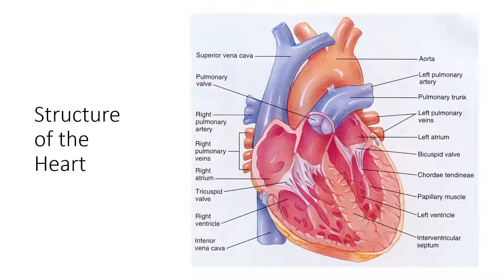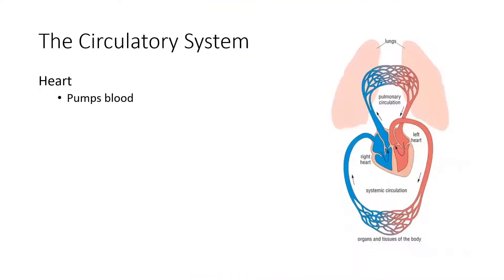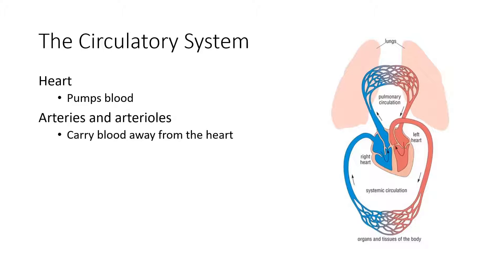The heart is the muscular structure that contracts to send blood either to the pulmonary system or to the circulatory system. Pulmonary circulation goes from the right side of the heart to the lungs and comes back into the left side, where the left side pumps blood out to the rest of the body. Arteries and arterioles carry blood away from the heart, regardless of whether they are pulmonary or systemic.